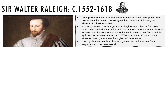Walter Raleigh was an influential courtier and explorer throughout Elizabeth I's reign — an English nobleman, explorer and favourite of the Queen. He took part in a military expedition to Ireland in 1580, which gained him enormous favour with Elizabeth and he was given land there following the defeat of a local rebellion. In 1584, Queen Elizabeth granted Raleigh a Royal Charter for seven years, allowing him to explore, take over and rule any lands not Christian or ruled by Christians, in return for one fifth of all the gold and silver mined there. In 1587, he was named Captain of the Queen's Guard, the highest office at court.